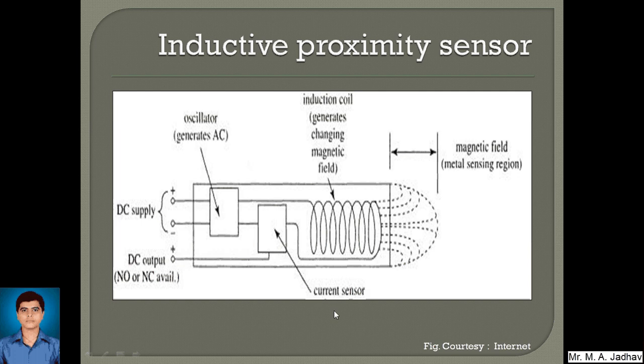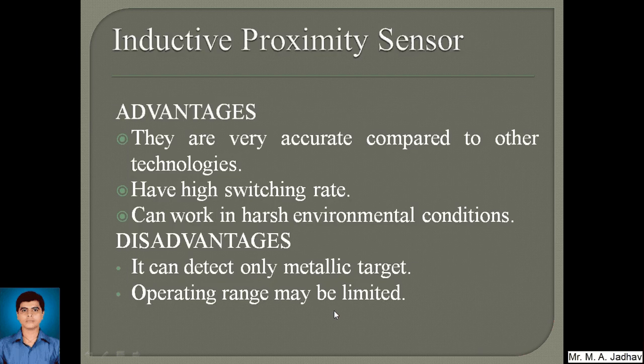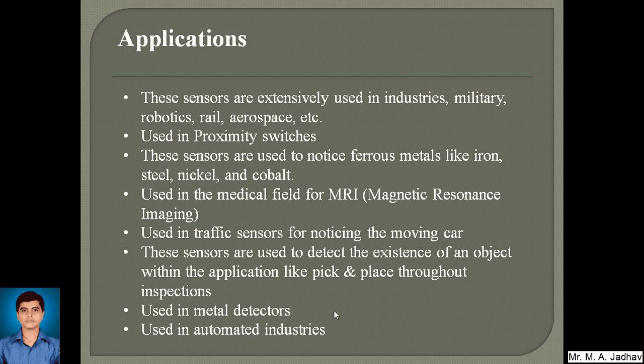The advantages of inductive proximity sensors are that they are very accurate compared to other technologies and have a high switching rate. They can work in harsh environmental conditions. A disadvantage is that they can detect only metallic targets — since we use a magnetic field, non-metallic objects or liquids cannot be detected. Another disadvantage is that the operating range is limited.